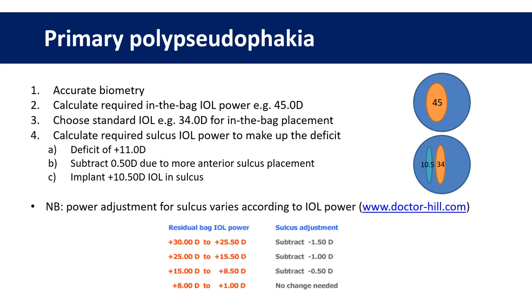Here is how you'd calculate a piggyback lens if you were planning primary polypseudophakia in an extreme hyperope. Accurate biometry is paramount, and patients should be advised of the high risk of post-operative refractive error, as accuracy in hyperopic eyes with high-powered lenses is much less than average. You calculate the total in-the-bag IOL power required — in this case 45 diopters — then choose the highest available power of your standard in-the-bag lens, say 34 diopters. That leaves a deficit of 11 diopters to be provided by the piggyback lens. You then subtract some power for the more anterior sulcus placement — in this case half a diopter — meaning a 10.5-diopter piggyback lens is required.